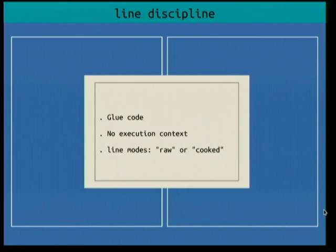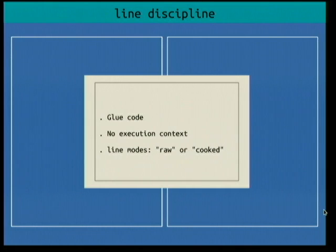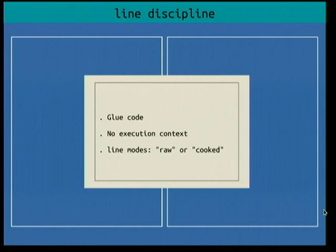The line discipline is glue code — it can't call anything else, so it's not alive. It offers two modes: raw and cooked. If you open a terminal, you're in cooked mode, which means you type a bunch of stuff and press Enter, then it executes. If you press Control-C, that becomes a signal — the kernel emits SIGINT. In raw mode, everything you type, including special sequences, goes straight to the program and is not interpreted at all.